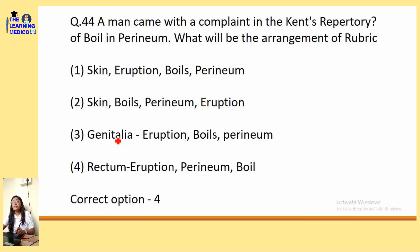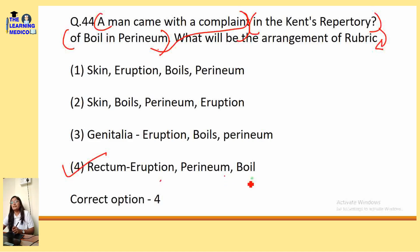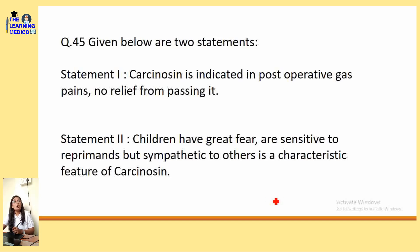A man came with complaints of a boil in the perineum. What will be the arrangement of rubrics in Kent Repertory? The correct option is: Rectum → Eruption → Perineum → Boil. You need to be thorough and read the repertory carefully.